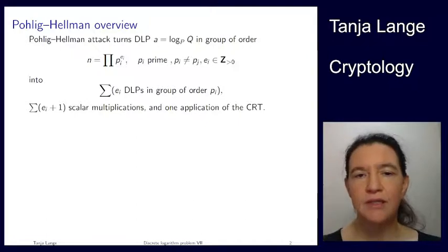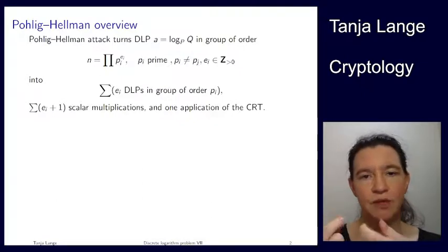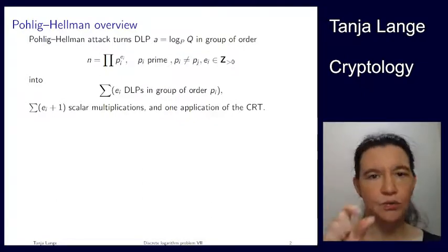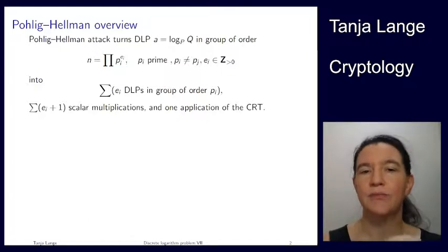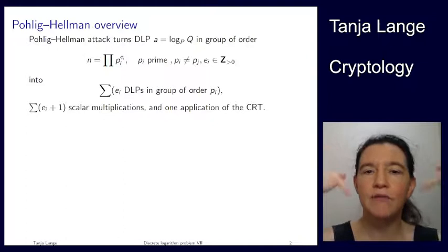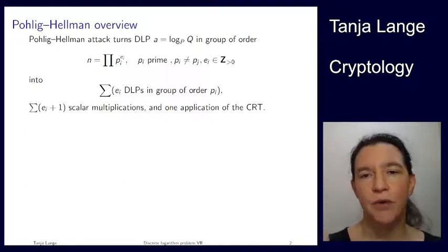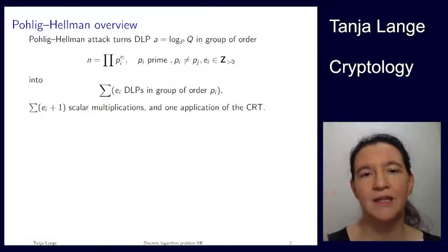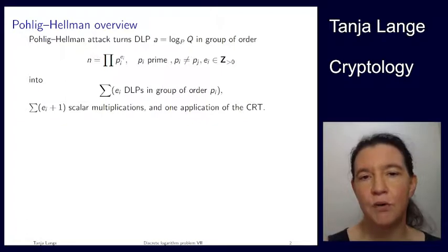Think about the example that we had, where the 500,002 was written as 2 times 53 squared times 89. So we're having different primes 2, 53 and 89. So pi is not the same as pj if you have a different number, and we only take those which have a positive exponent larger than zero. So there is no 3 in the group order, so it's not that 3 to the 0 appears here, it's only the primes that have exponent larger than zero.